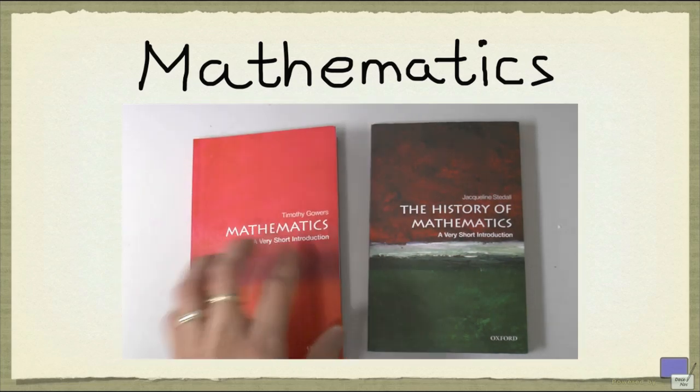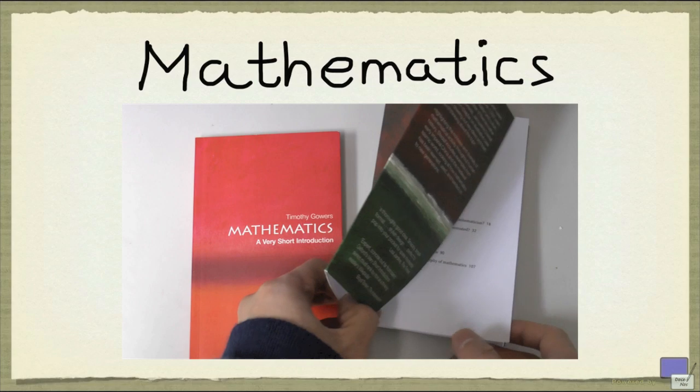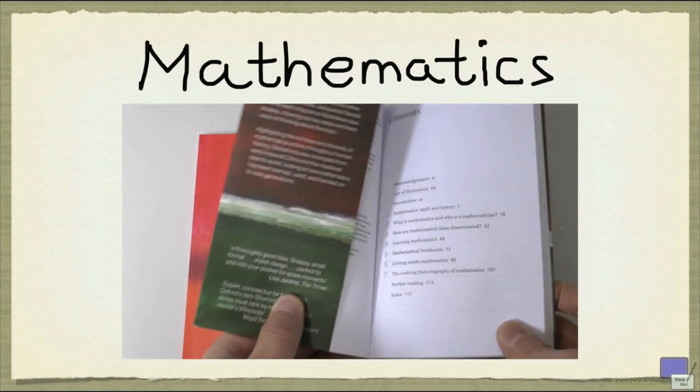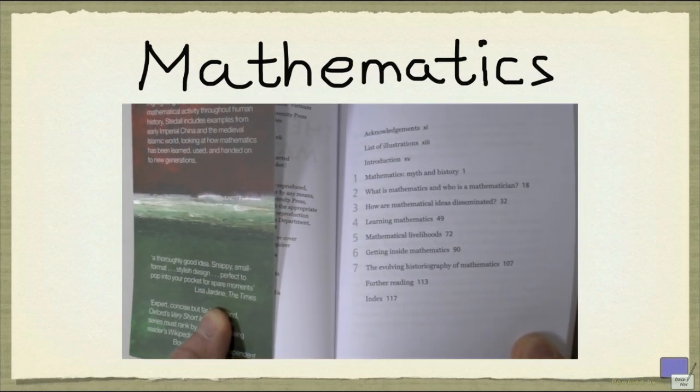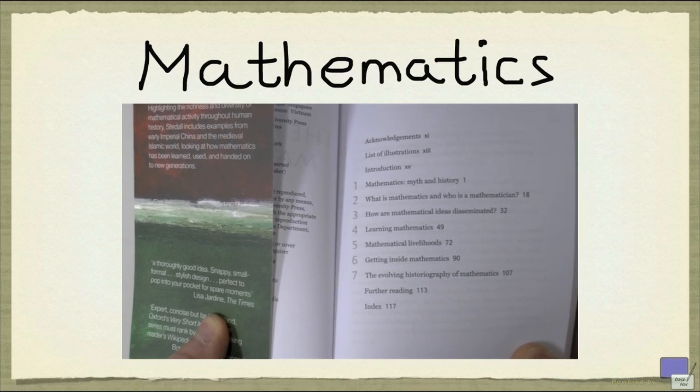And the second book answers questions like who is a mathematician, what is mathematics, the community of learning mathematics, etc. The perspective taken in this book is quite different from other history of mathematics books, and I think it's quite refreshing.